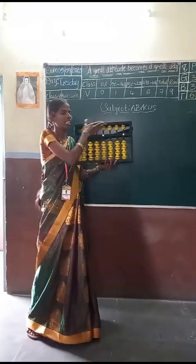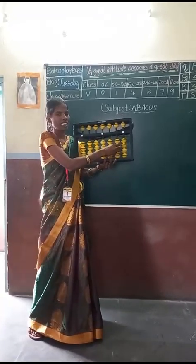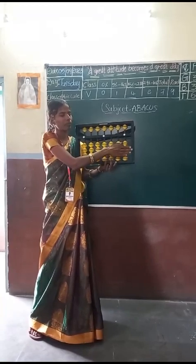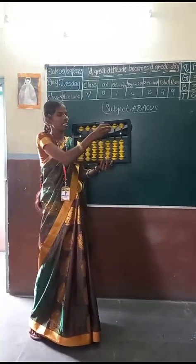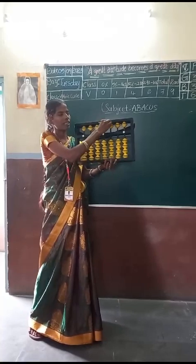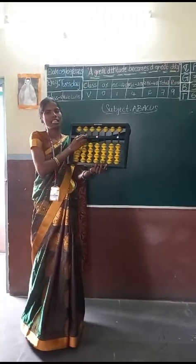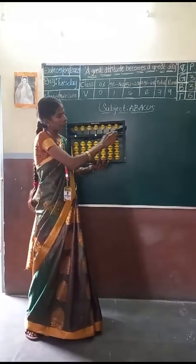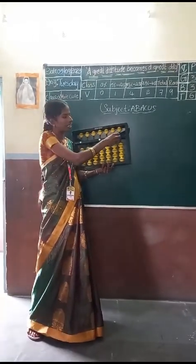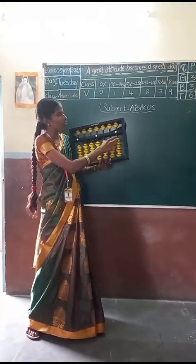The Abacus tool is rectangular shape. In this, beads are there. Below the answer line, we call them lower beads. Above the answer line, we call them upper beads. Now, comes to 1 space. We have to learn the first 1 space. In this 1 space, lower side beads — how many are there? Just count.